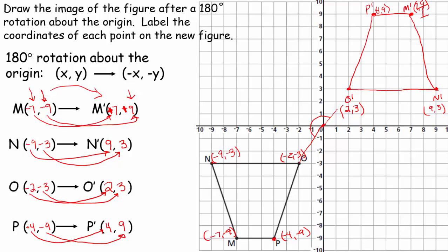Now let's go ahead and double-check to make sure our image is 180 degrees about the origin. When I connect O to 0, 0, this length has to be the same as this length — and they are the same. Notice I have created a 180 degree angle between the two points through the origin. So it applies to every part of my rule: a 180 degree angle is formed, it's about the origin, and it's in quadrant 1, which is 180 degrees away from where I started. Perfect — it works.